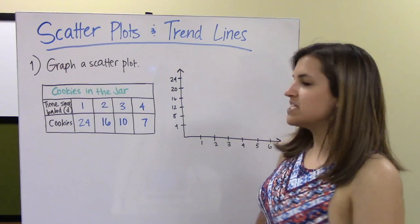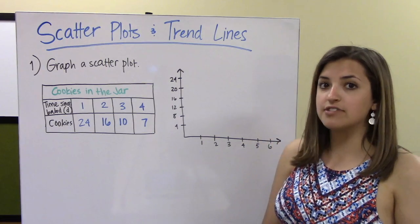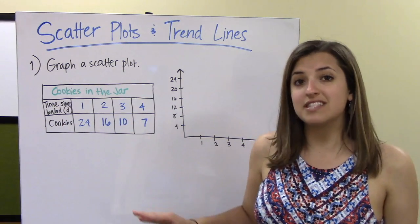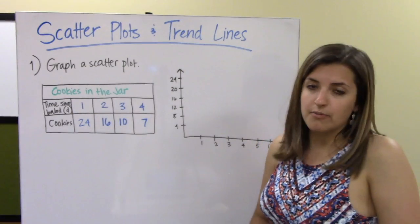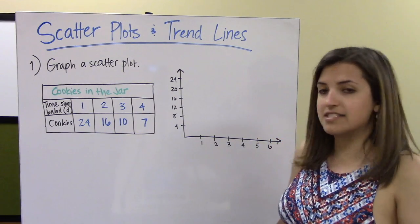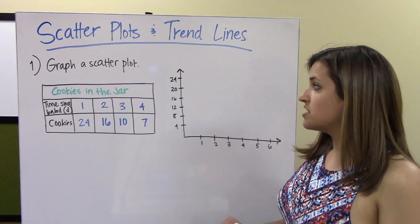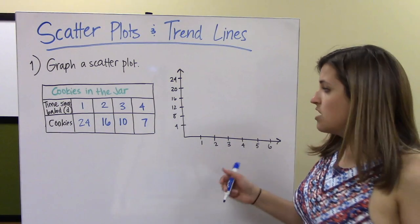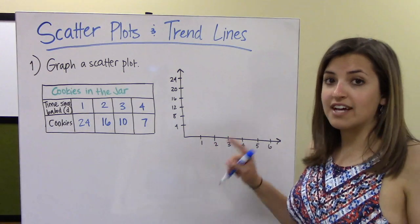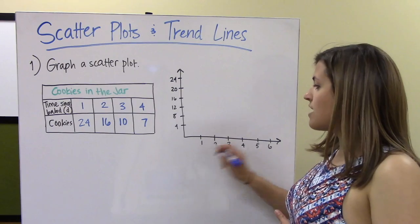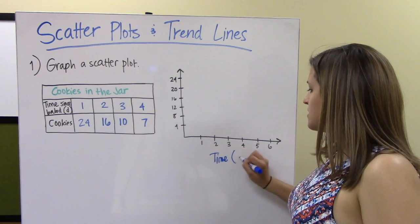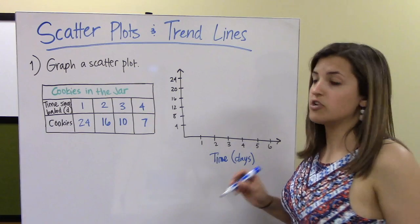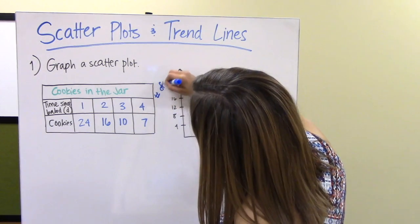In problem number one, we're given a table that shows the number of cookies left in a jar after the time they were baked. One row is dedicated to time since baking in days, and another to the number of cookies in the jar. We want to create a scatter plot. The first thing we do is label our axes. Time usually goes on the x-axis, so I'll label it 'time in days since they were baked.' On the y-axis, I'll put 'number of cookies left in the jar.'